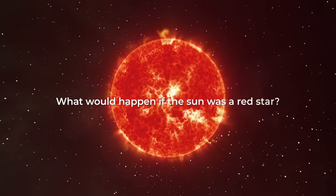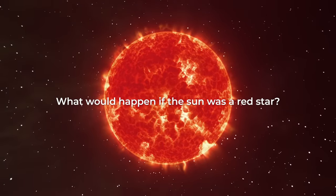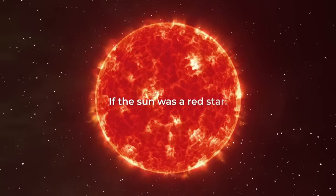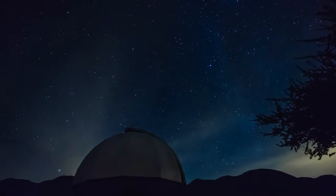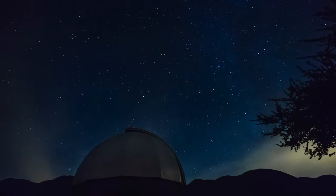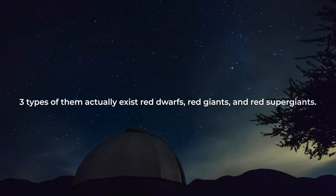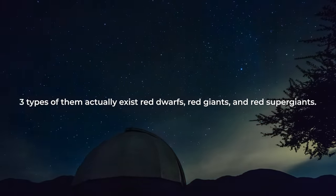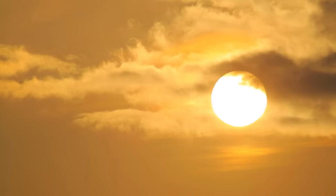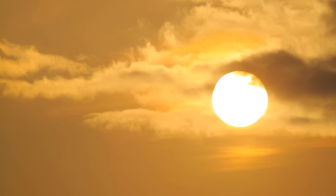So what would happen if the sun was, let's say, a red star? If the sun was a red star? Well, it depends on what type of red star. According to astronomers, three types of them actually exist: red dwarfs, red giants, and red supergiants. The first ones are way cooler than the sun and way smaller.